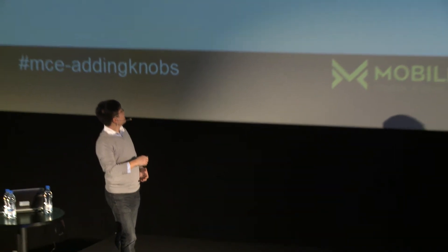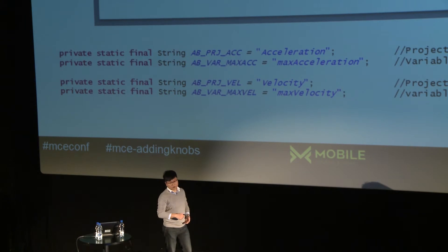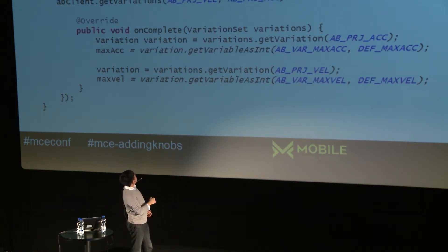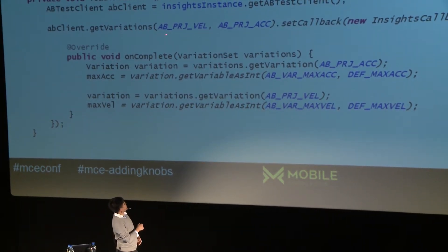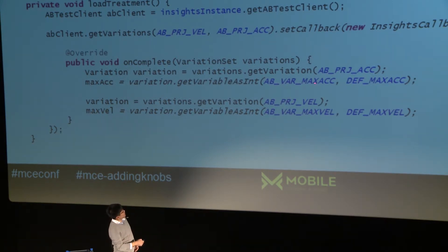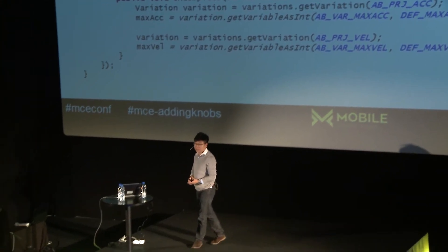You can also add multiple projects into one application — for example, one project testing ad placement and another testing imagery. The code shows two projects: 'acceleration project' and 'velocity project', each with their own variations. The API's get variations call can accept multiple projects. You pass multiple project names to get variations, and once the variations return in a set, you pass the variation name to retrieve the value from a particular project. In about four lines of code, you can accommodate multiple projects in one application.